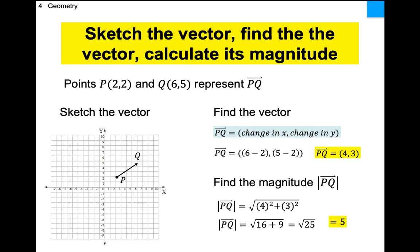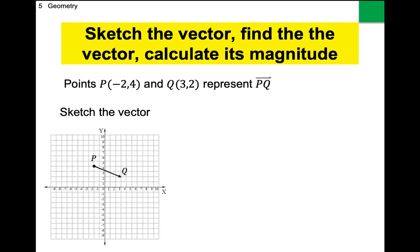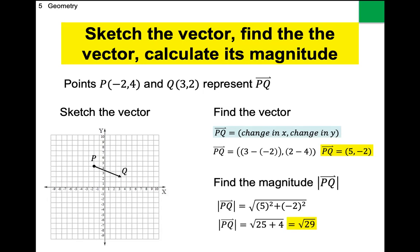That's three things: sketch the vector — make sure you know where it starts and finishes; find the vector — that's the direction, endpoint minus beginning for x and y; and find the magnitude — square both components, add, take the square root. For example three, the direction is (5, -2). Five squared is 25, two squared is 4, 25 plus 4 is 29. There are no perfect squares in 29, so the magnitude is root 29. Vectors get way more complicated, but this part is easy.